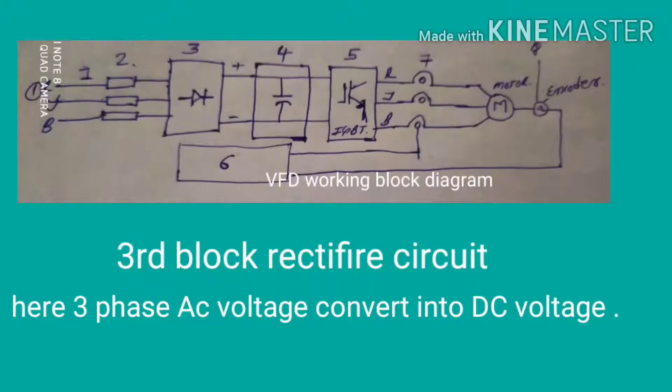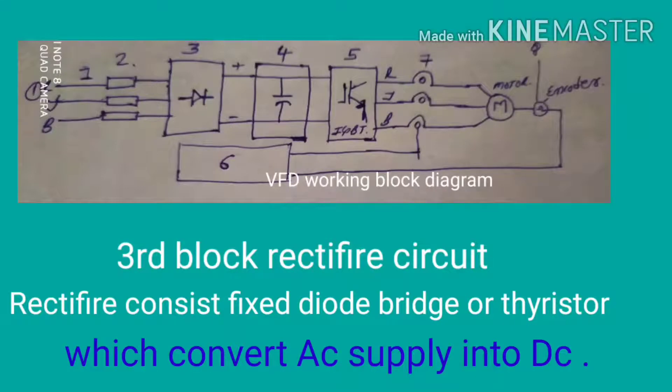This bridge rectifier circuit converts three-phase AC supply into DC supply, and then this DC supply is forwarded to the fourth block, which is the filter circuit.